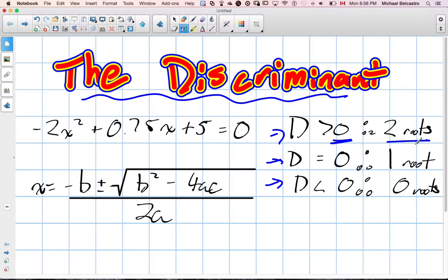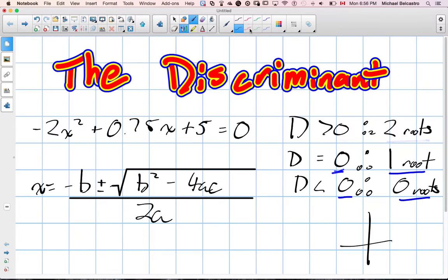When the discriminant's a positive value, there's two roots. When it's equal to zero, there's one root. When it's less than zero, there's zero roots. And what that means on a graph is essentially greater than zero means it's crossing the x-intercept.